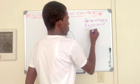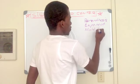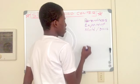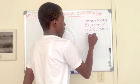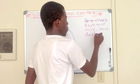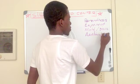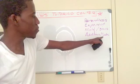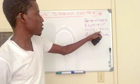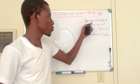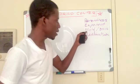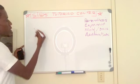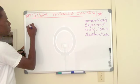Then you do multiplication and division — you can do multiplication and division at the same time. Then you can do addition and subtraction at the same time. But you have to do all the parenthesis first, the exponent second, then multiplication and division, then addition and subtraction.